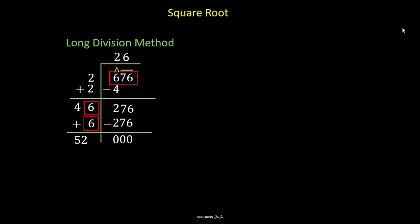The moment we get 0 and there are no more pairs left, we are done. The square root of 676 is the number on top, which is 26. So the square root of 676 is 26. Trust me, it is not difficult — but it is a little lengthy.